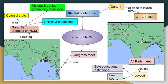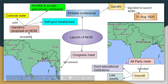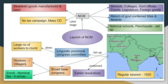The NCM was launched by Gandhi at the Khilafat Conference on 31 August 1920. There was an all-party conference and all-party meetings. A special session was held in Kolkata, where Gandhi formally moved the proposal for the Non-Cooperation Movement, urging the British to address Indian grievances.